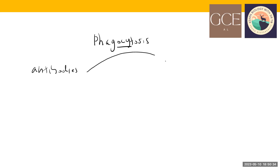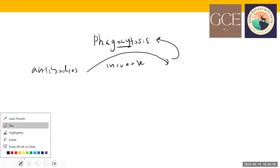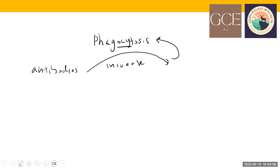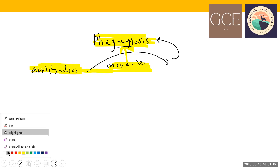So what is the role of antibodies? Antibodies can increase phagocytosis by many, many fold — maybe a hundred times, maybe a thousand times. Overall, the main mechanism of antibodies is that they increase phagocytosis.